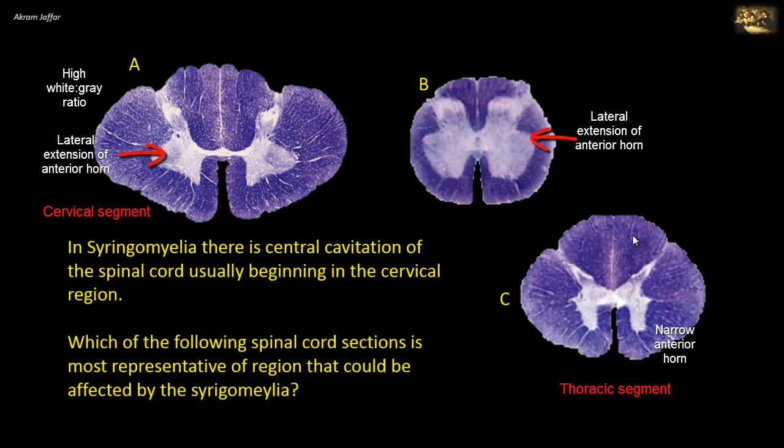That's why the white to gray ratio is higher as we go to the rostral segments of the spinal cord, as demonstrated in A. So A is a cervical section that could be most affected by syringomyelia, although this section doesn't show the disease — but it is a cervical section.